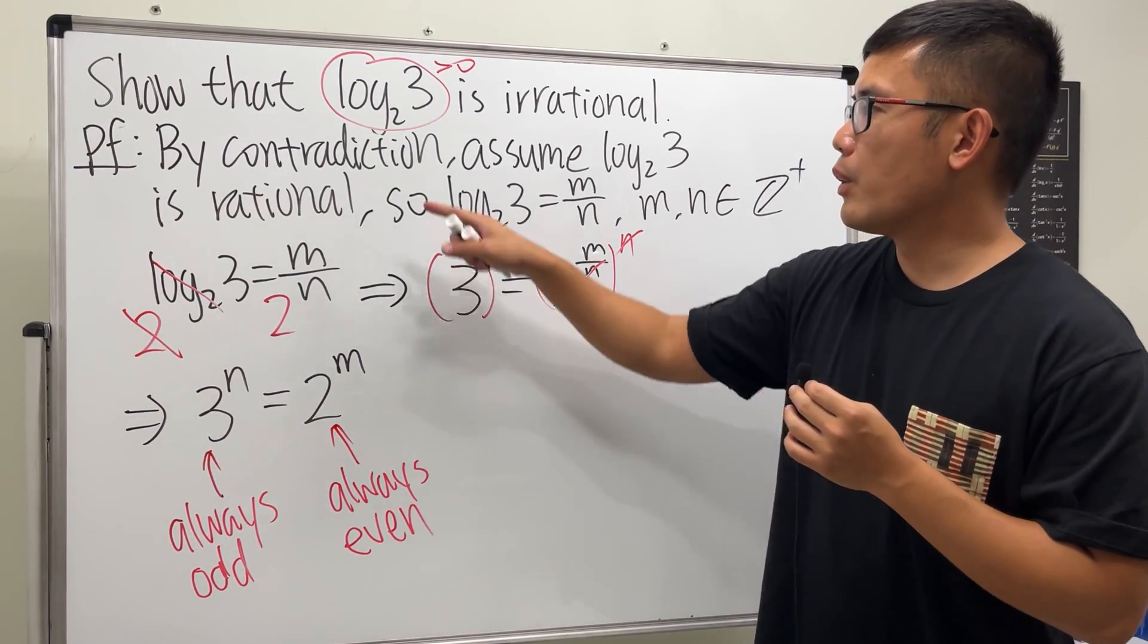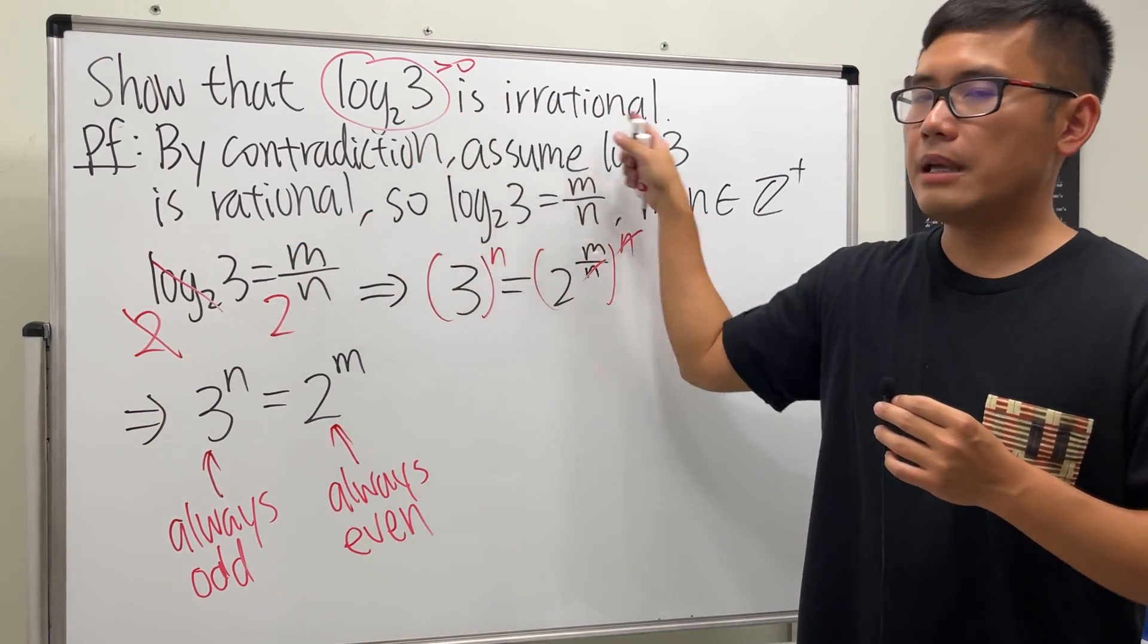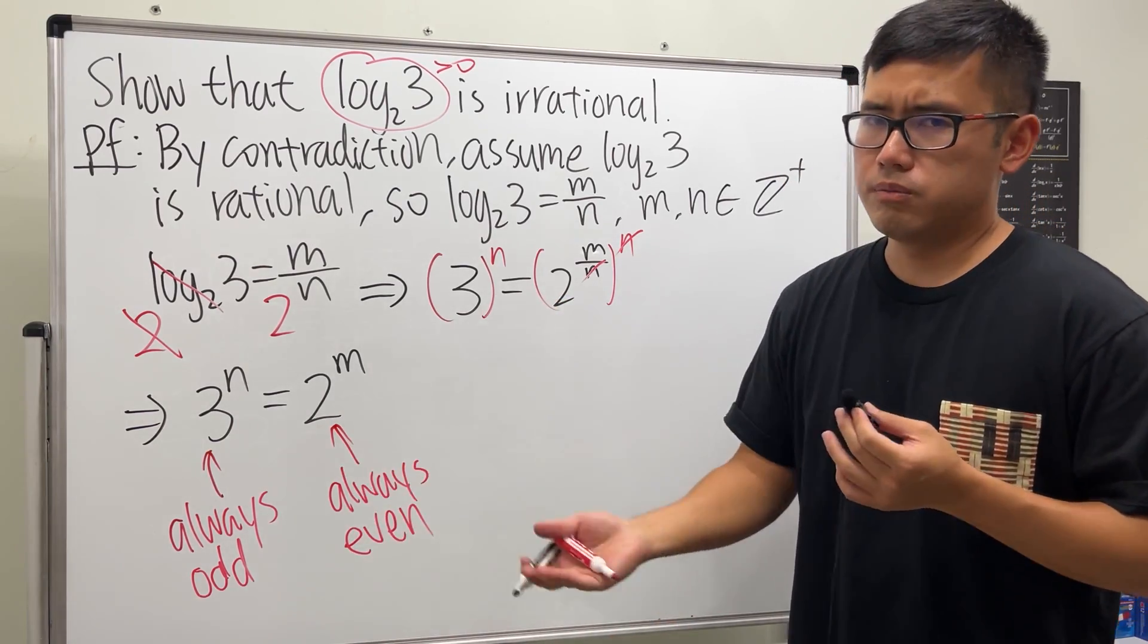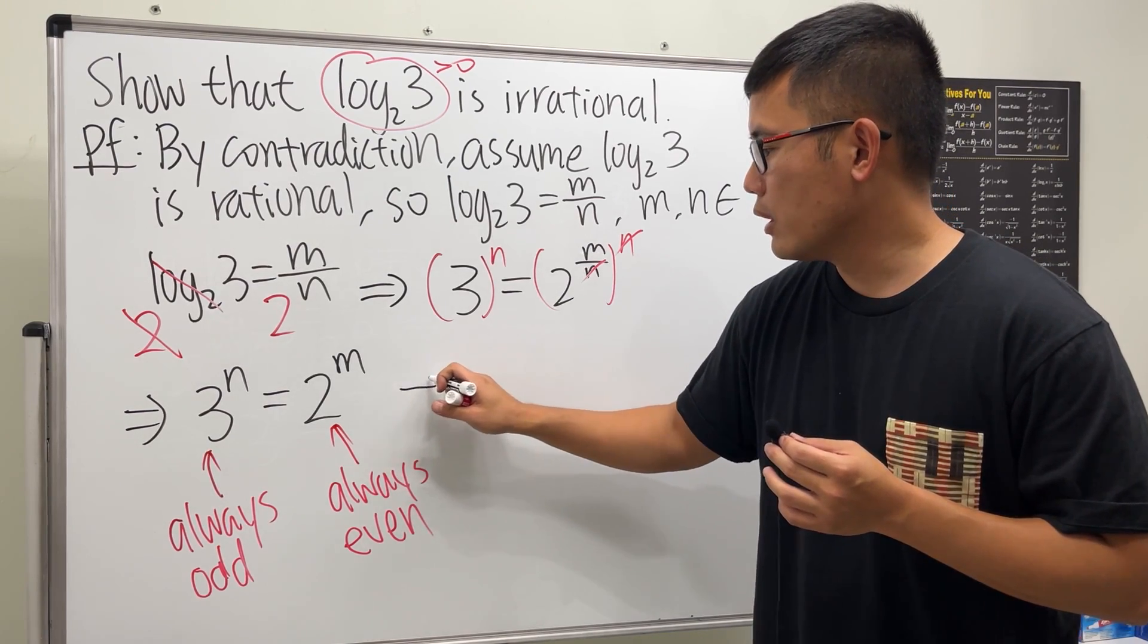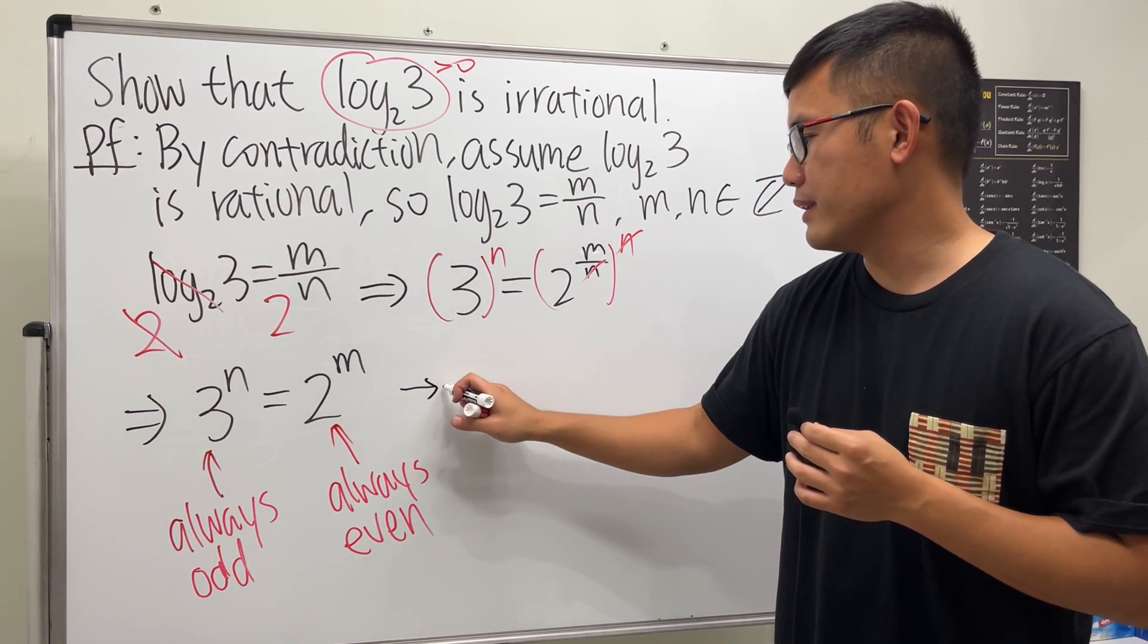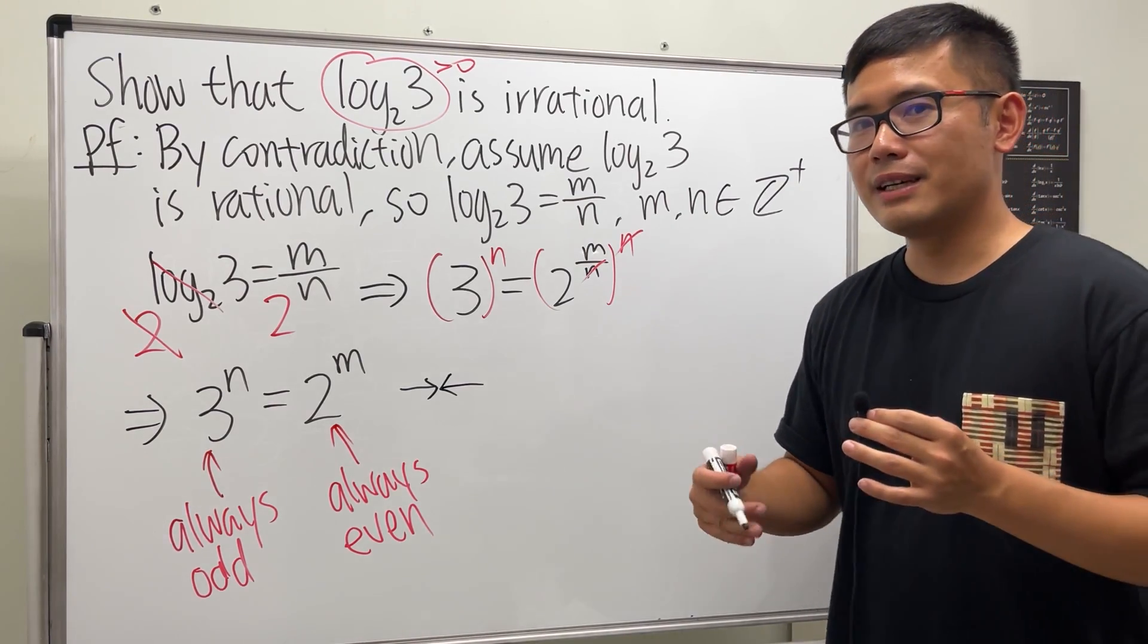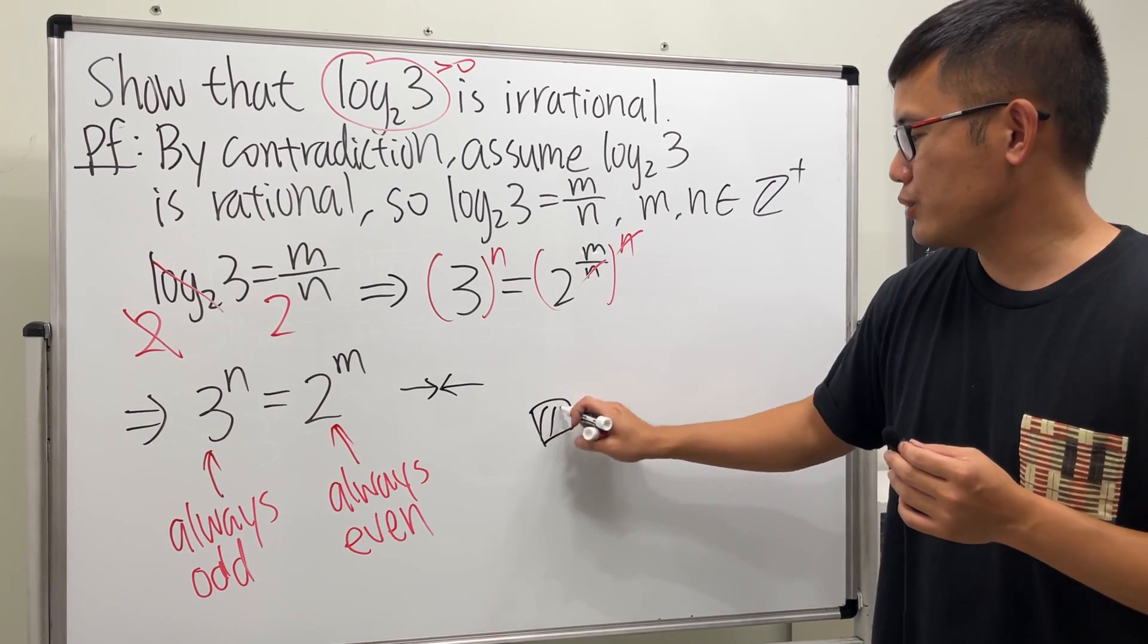So that means our original assumption here must be wrong, meaning that this statement that we're trying to show is actually correct. So once you have this, you are pretty much done. And because this is a contradiction proof, I like to draw an arrow going this way and then go the other way, showing that there's a contradiction.